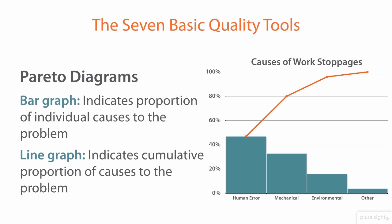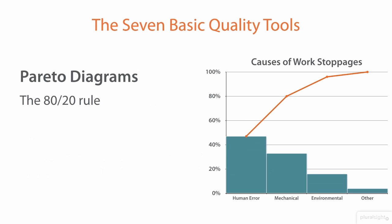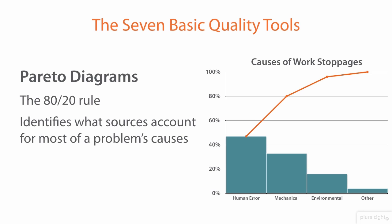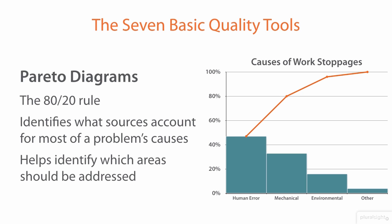We might see that human error plus mechanical failures accounts for about 80% of causes for work stoppages, and that's where we would place most of our emphasis, rather than trying to control environmental or other issues we can't get a good grasp on. This follows the 80-20 rule, seen often in business and science, and goes back to Vilfredo Pareto — who the diagram is named after. It helps identify which sources account for most of a problem's causes, because that's where we have the most marginal benefit. Solving human error and mechanical failures solves the vast majority of issues, even if many other smaller factors each contribute less than 5% of causes. It's simply not worth attacking those disparate issues when the payoff isn't there.